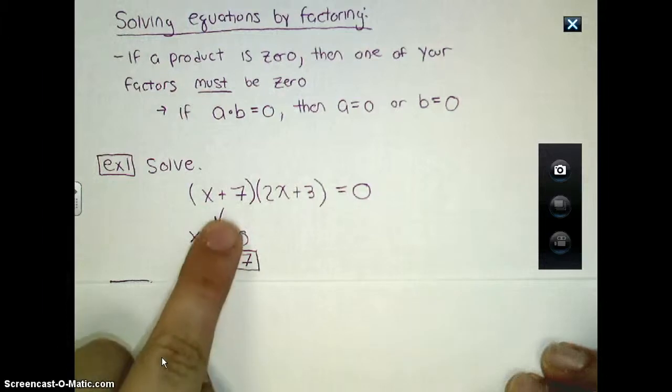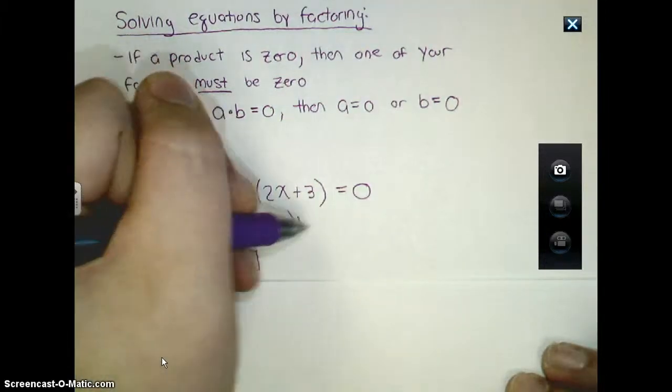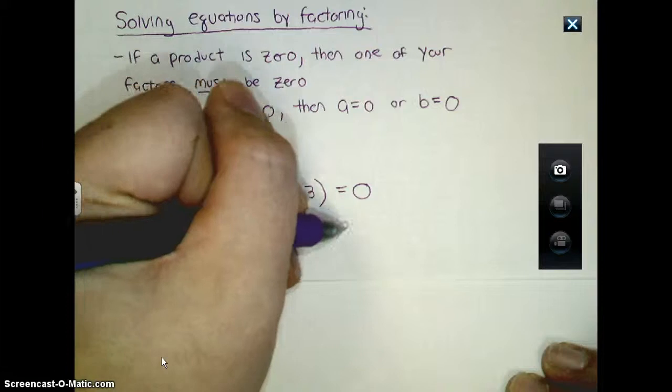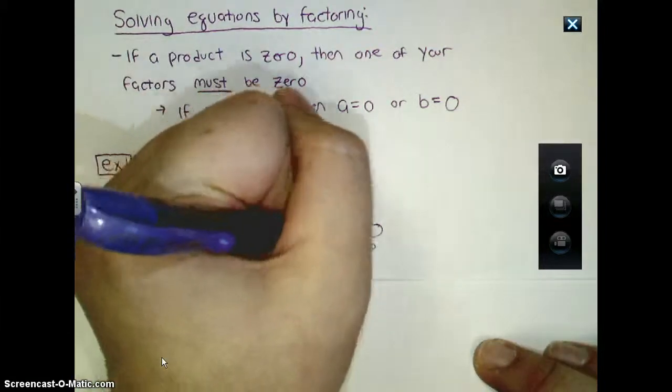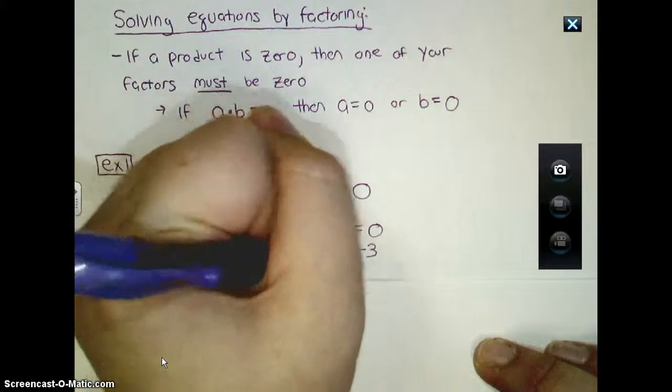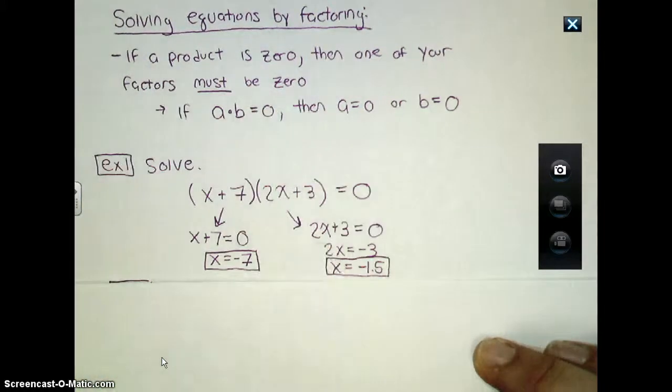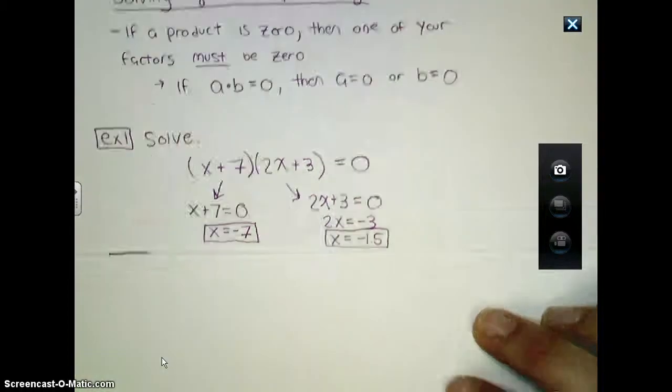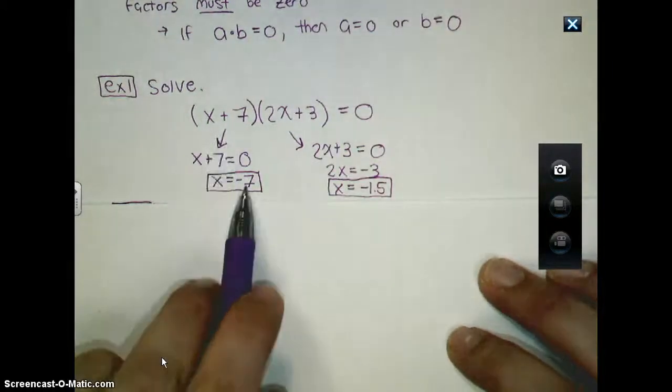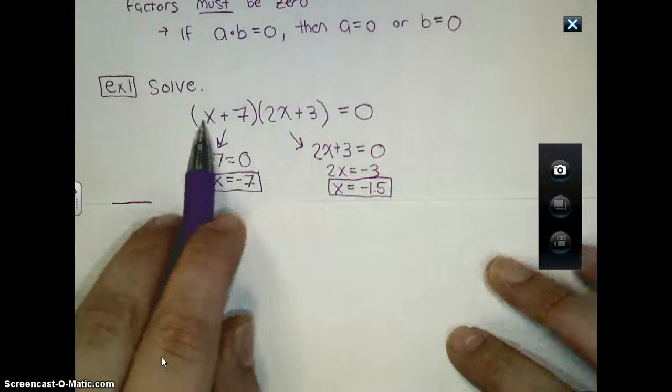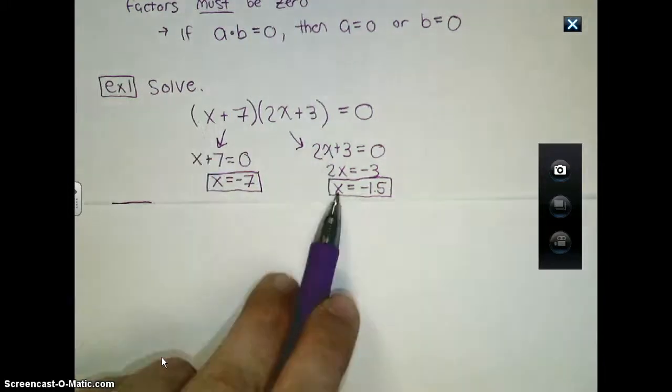However, this doesn't have to be zero. What if this one was zero? So I'll set this one equal to zero: two x plus three equals zero. And when I solve for this factor, I'm going to get 2x equals negative three, and x is going to equal negative 1.5. That's what I get when I divide negative three by two. So in this first example, if my x is negative seven, this factor will become zero, thus making the whole equation equal to zero.